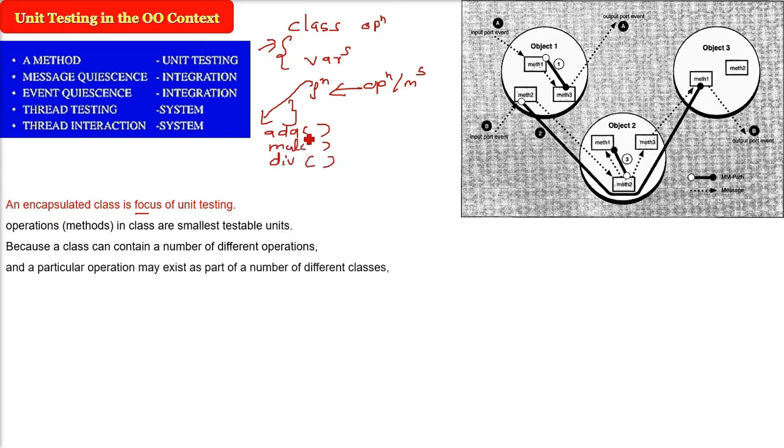And a particular operation, it also may exist as a part of a number of different classes. Because we know about polymorphism, we know about function overloading. So we can have this add function or any of this function in another class also. So we have to test a single operation as a part of a class.